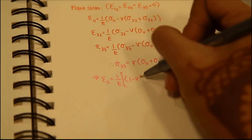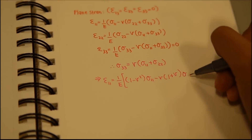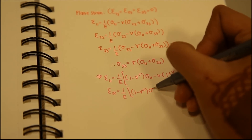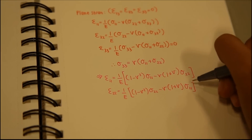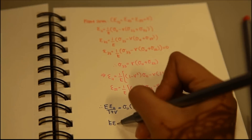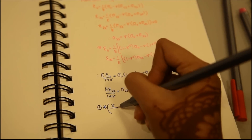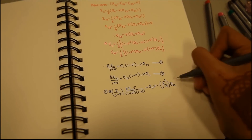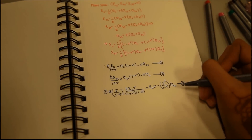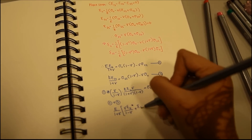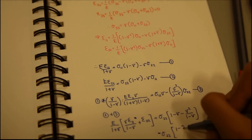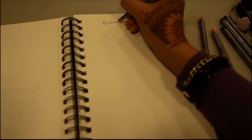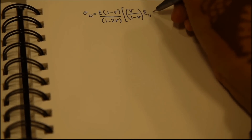Adding this to the previous equations, we get the first equation relating epsilon 1,1 to sigma 1,1 and sigma 2,2, and the second equation giving epsilon 2,2 in terms of sigma 2,2 and sigma 1,1. Multiplying the first equation by mu divided by (1 minus mu), we get a third equation, and adding the second and third equations together, we get epsilon 1,1 and epsilon 2,2 in terms of only sigma 2,2.